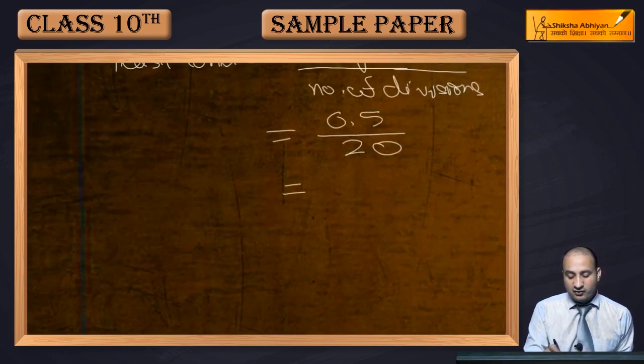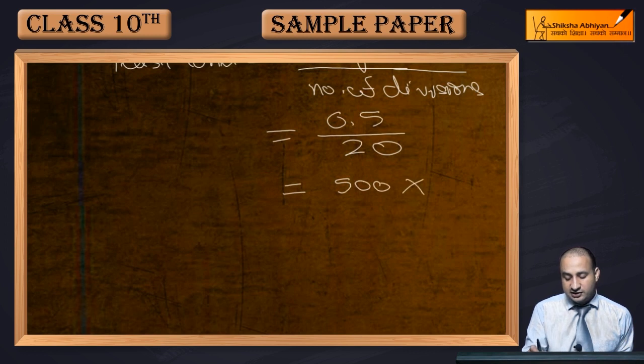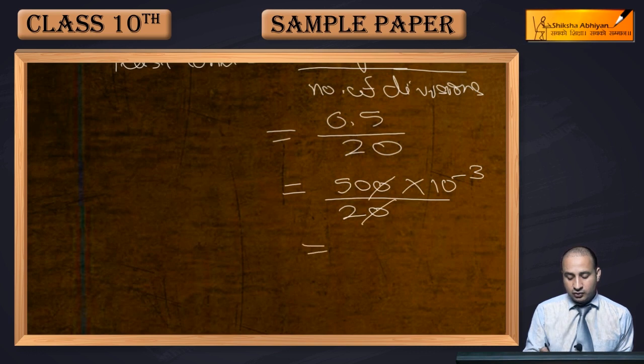Multiply by 10 to the power minus 3, divided by 20. This cancels out to 25 times 10 to the power minus 3.